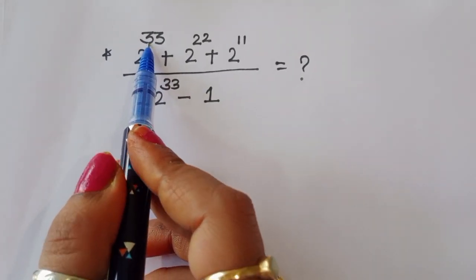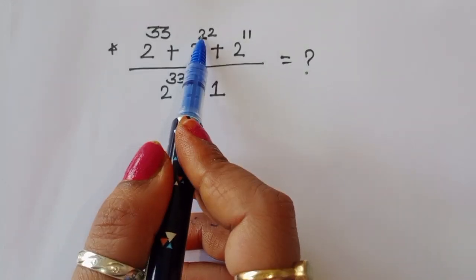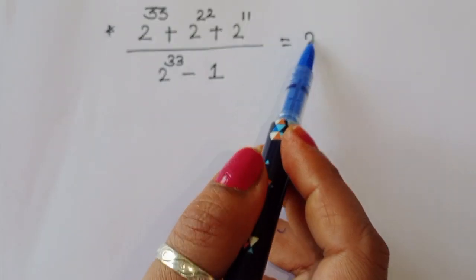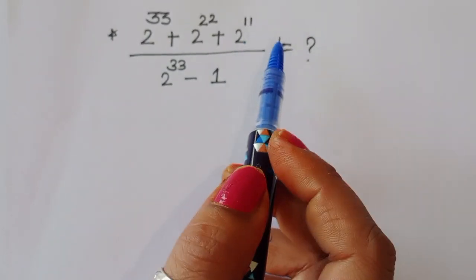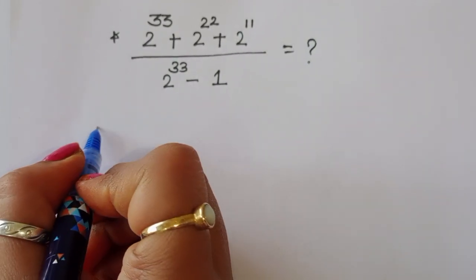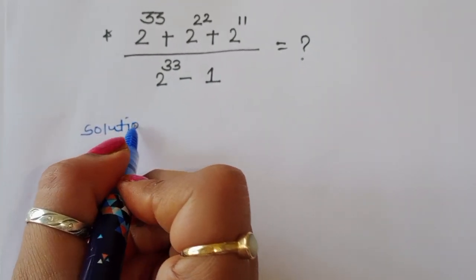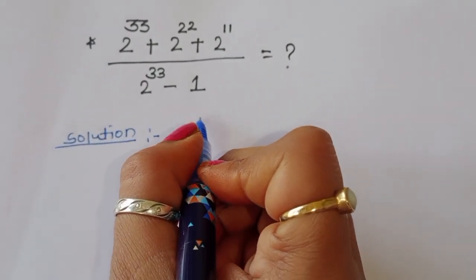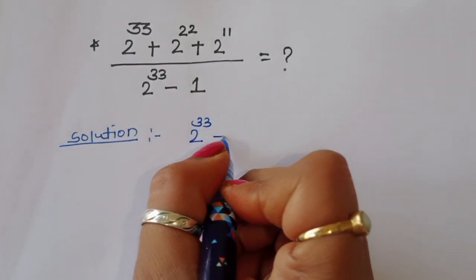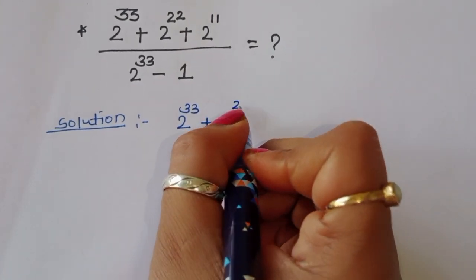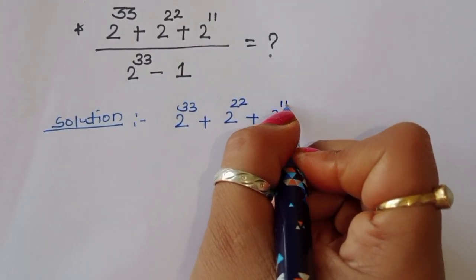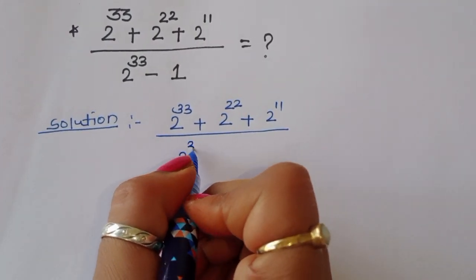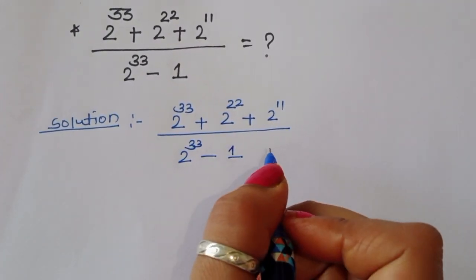The question is: (2 power 33 + 2 power 22 + 2 power 11) divided by (2 power 33 minus 1). We have to find the value of this. Let's see the solution.